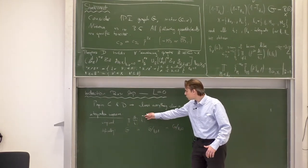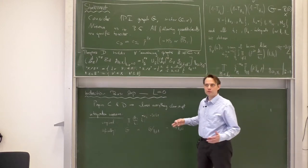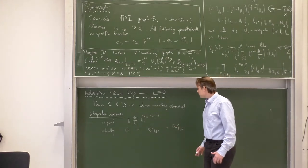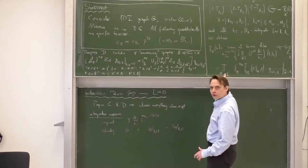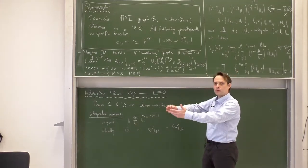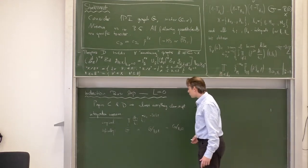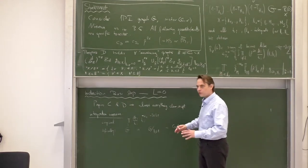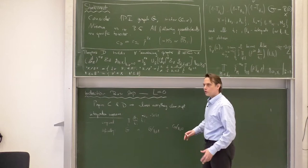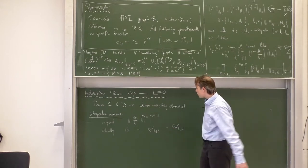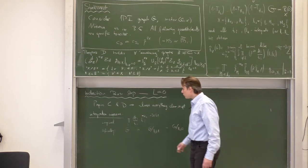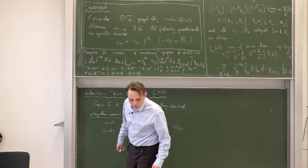So you cannot uniformly combine the measure for all the different counterterm graphs. The new way to write the measure does exactly that — you can really nicely combine graphs and counterterm graphs, factor out a common measure factor, combine the rest, and cancel divergences. So let us now prove the equality.